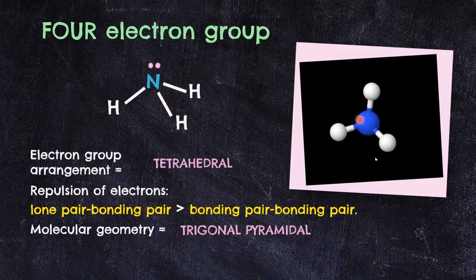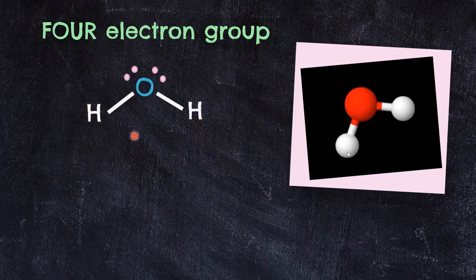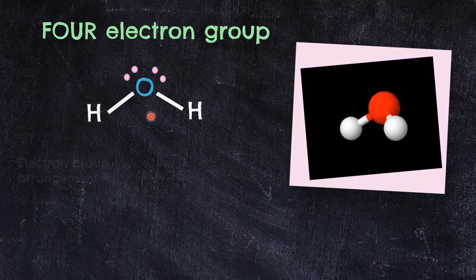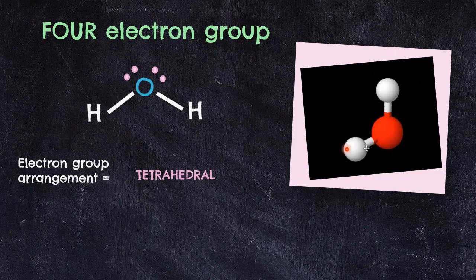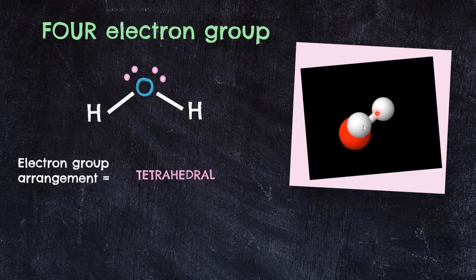Hence, a trigonal pyramidal geometry is formed. The three hydrogens form the base and the lone pair acts as the summit, connecting all three base atoms. The bond angle resulting from these repulsions should be less than 109.5°; specifically for ammonia, it is 107.3°.